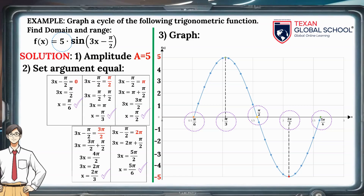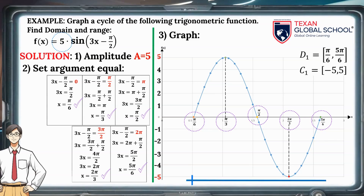Finally, the cycle ends at (5π/6, 0). The domain goes from π/6 to 5π/6. Subtracting these values, we obtain the period T = 2π/3. The range is determined by the amplitude: from −5 to 5.